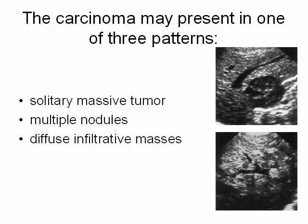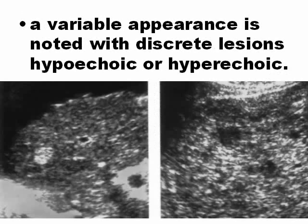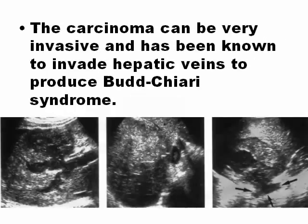The carcinoma can present in three patterns: solitary massive tumor, multiple nodules, or diffuse infiltrative. Sometimes the lesions are hyperechoic, sometimes hypoechoic — appearances vary considerably. This carcinoma is very invasive and can produce Budd-Chiari syndrome, which is obstruction of the hepatic veins, and hepatocellular carcinoma is one cause of this syndrome.